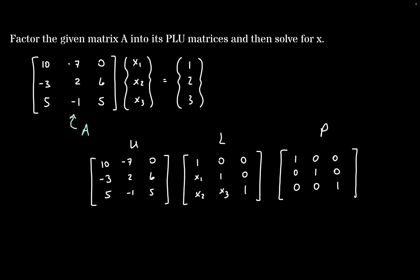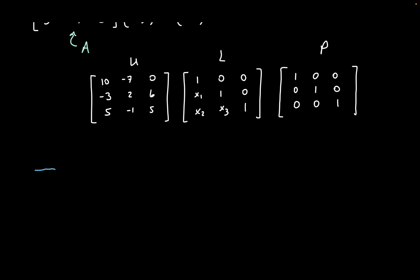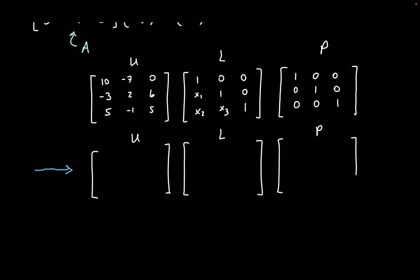Now that we have our three matrices written out, we want to start making some operations. First, we check whether the first value — row 1, column 1 — is the largest magnitude number among the first column entries. In this case it is, because 10 is greater than the absolute value of negative 3, which is 3, and it's also greater than 5. So we don't have to do any row swapping. If, say, the 5 were a 15 instead, we'd want to swap rows because it leads to a more accurate result for our x vector.